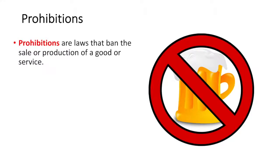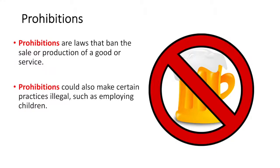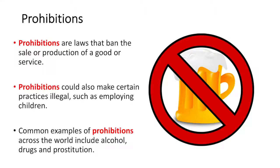Prohibitions are laws that ban the sale or production of a good or service. They can also be used to make certain practices illegal, such as employing children. Common examples of prohibitions around the world include alcohol, drugs, and prostitution.